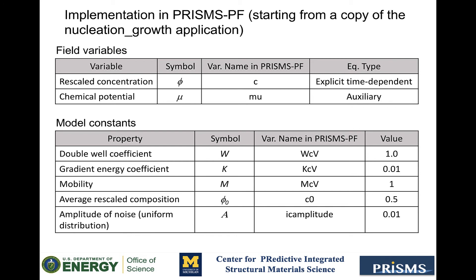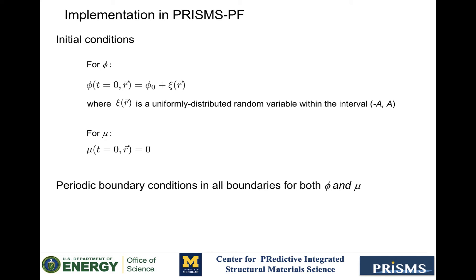Moving on to initial conditions. Instead of inserting a nucleus, we are going to set the initial value of C to a constant value. This is the average composition plus a random noise term, which is within an interval given by twice the amplitude A, which we defined in the previous slide.